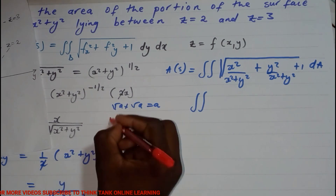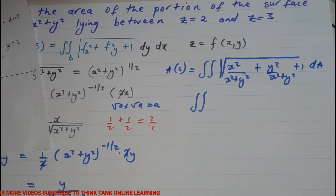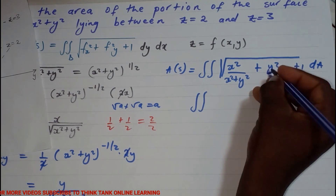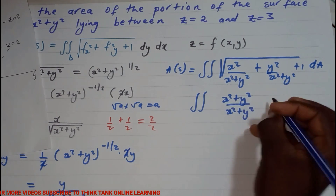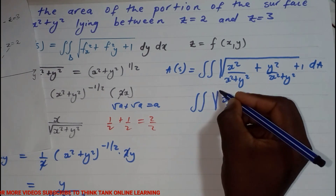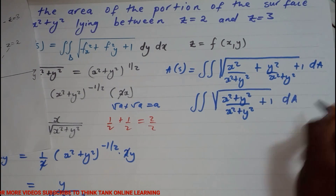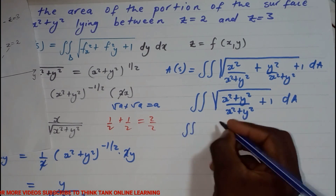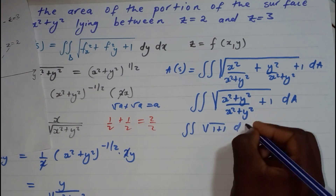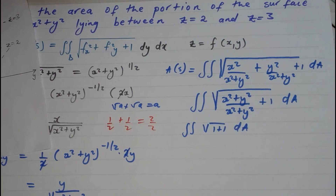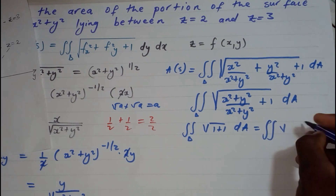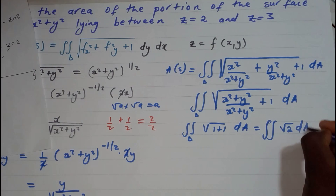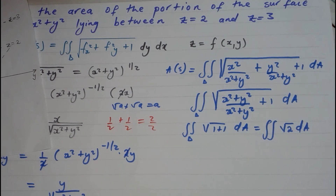These are like terms with the same denominator, so (x² + y²) / (x² + y²) = 1. Adding the 1 outside gives us 1 + 1 = 2 under the square root. So the area equals the double integral of √2 dA.